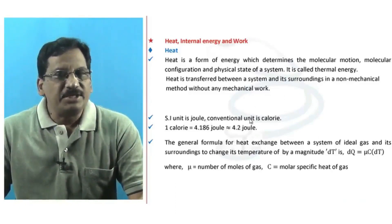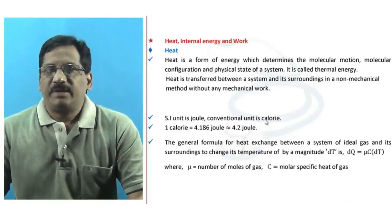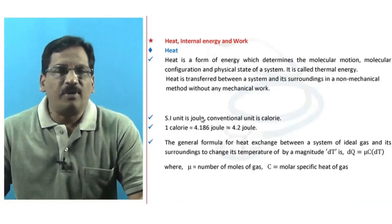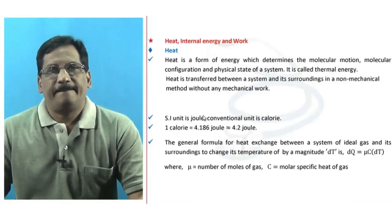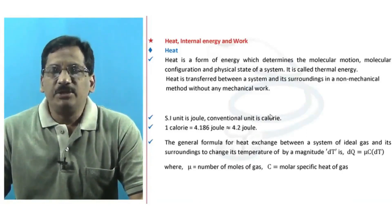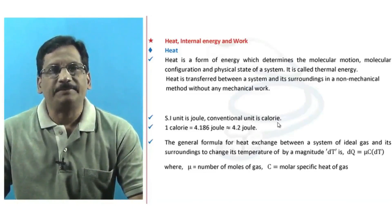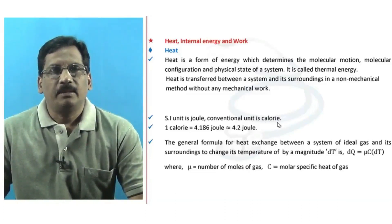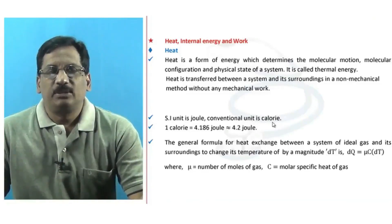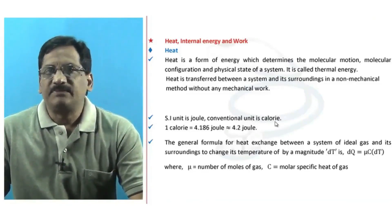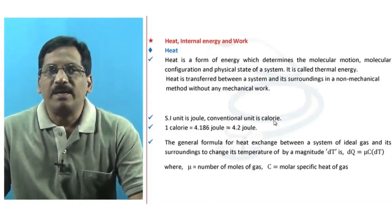The conventional unit for measuring heat is calorie. In SI, all forms of energy are measured in joules. Calorie is the amount of heat required to raise the temperature of 1 gram of water through 1 degree centigrade — specifically from 14.5°C to 15.5°C — under normal atmospheric pressure.